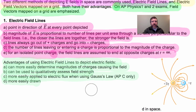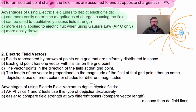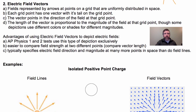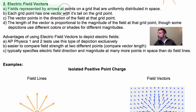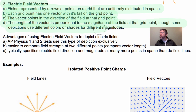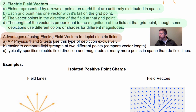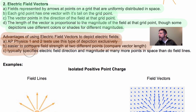The other way to depict fields is with electric field vectors. Electric field vectors are fields represented by arrows at points on a grid that are uniformly distributed. Each grid point has one vector with its tail on the grid point; the vector points in the direction of the field at that grid point, and the length of the vector is proportional to the magnitude. Some depictions use different colors for different magnitudes, but AP Physics 1 and 2 want you to use lengths to depict magnitudes.